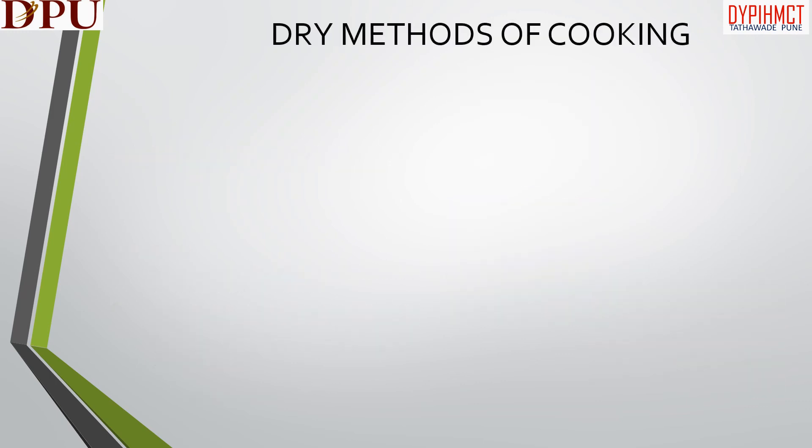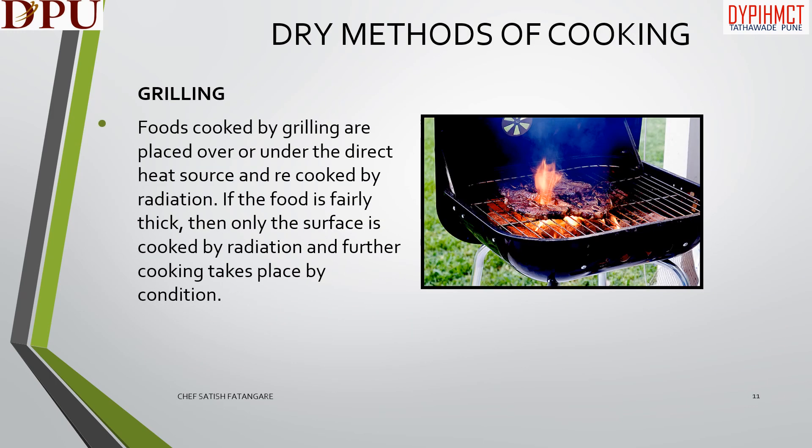Now we will discuss about grilling. Foods cooked by grilling are placed over or under a direct heat source and cooked by radiation. If the food is fairly thick, then only the surface is cooked by radiation and further cooking takes place by conduction.